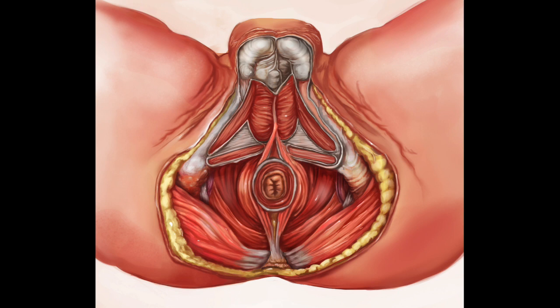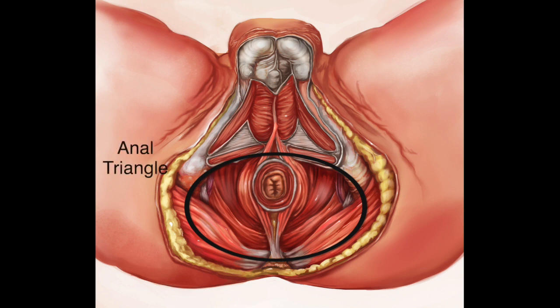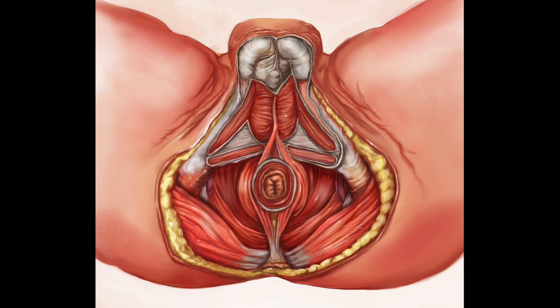The bottom part of the picture here is sometimes called the anal triangle. This contains really the rest of the pelvic floor, and it's the deeper layer. These are the muscles that make up the bulk of the supportive pelvic floor muscles that help support your internal organs and that sling around the rectum.